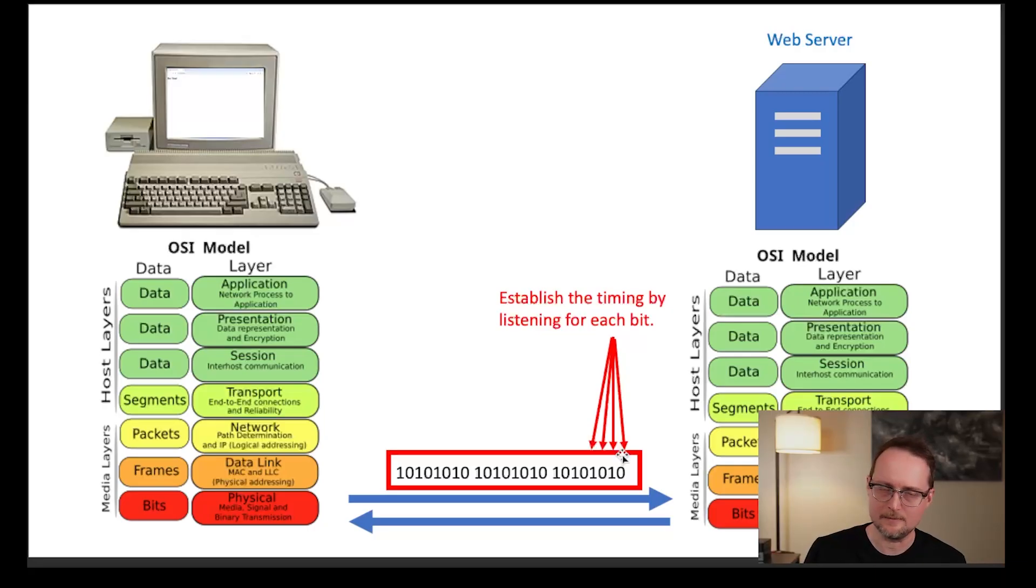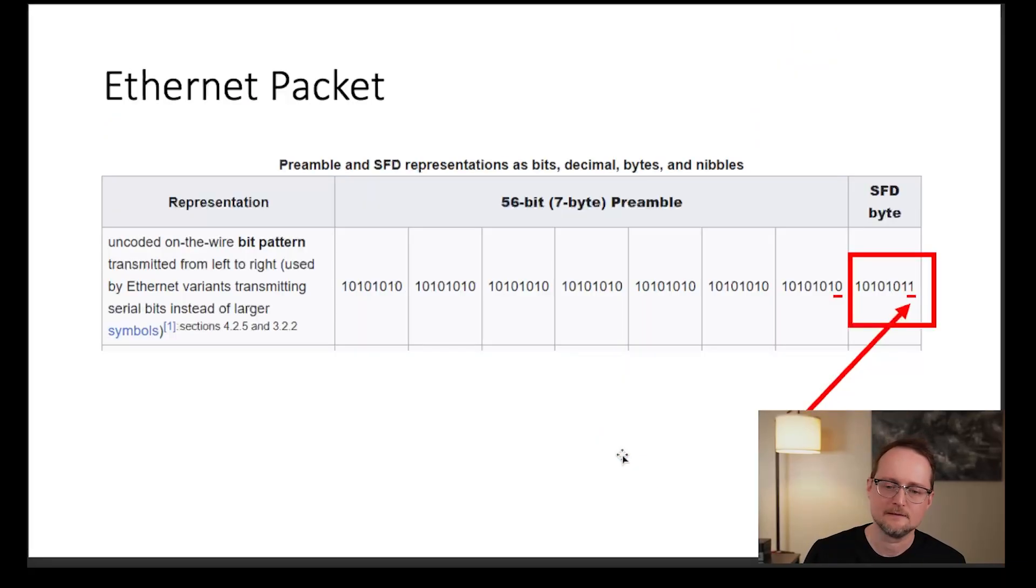So to establish the timing, the computer on the receiving end will listen for each bit coming in and it'll adjust its clock speed to match that pattern. Again, in this simple example, every bit is coming in every second. Now that we have our timing established from the first seven bytes, we're ready to let the web server know that we can begin transmitting data.